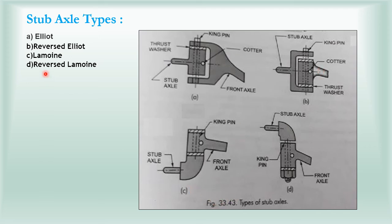The other type is Lamoine. This is an L-shape construction. The front axle is fitted to the bottom side of the stub axle, with a thrust washer for fixity, king pin and cotter joint. This is the Lamoine type of stub axle.